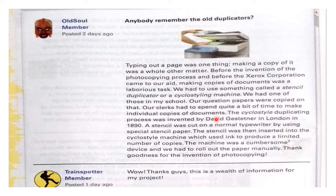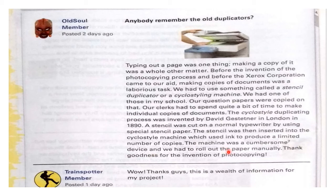The cyclo-style duplicating process was invented by David Gestetner of London in 1890. The stencil was cut on a normal typewriter using special stencil paper. The stencil was then inserted into the cyclo-style machine, which used ink to produce a limited number of copies.